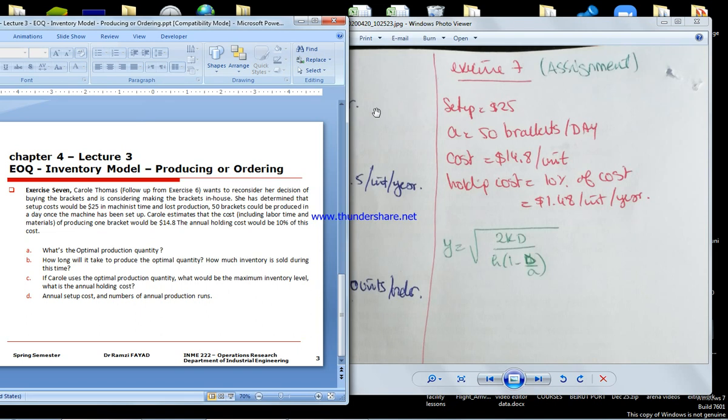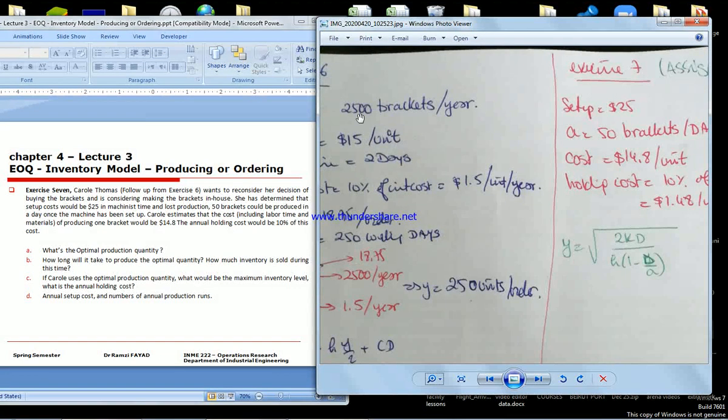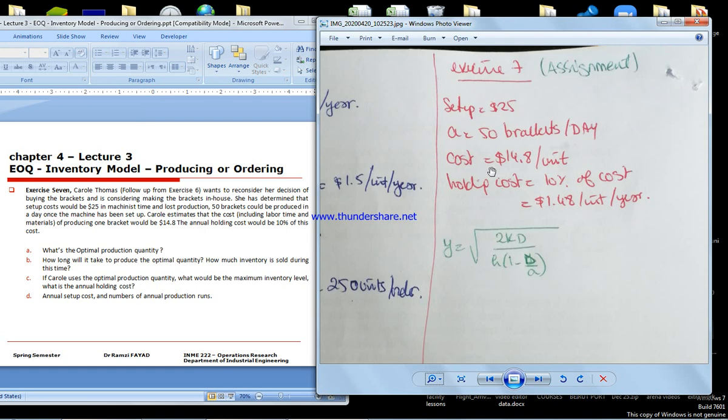She produces fifty brackets per day times two hundred fifty working days, which is twelve thousand five hundred, so you're fine. You just need to ensure she's consuming two thousand five hundred brackets per year over two hundred fifty working days. Producing fifty times two hundred fifty is twelve thousand five hundred.